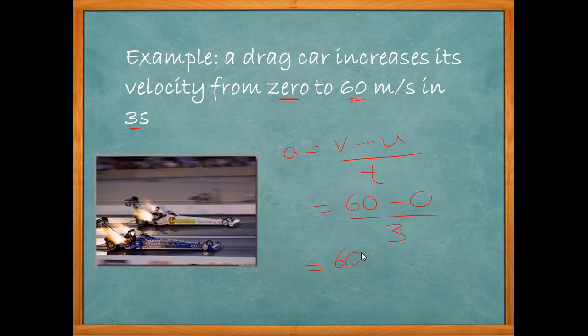We now know acceleration is 60 minus 0, which is 60, divided by time which is 3. The answer is 20 meters per second squared. That's how we do a simple acceleration calculation.